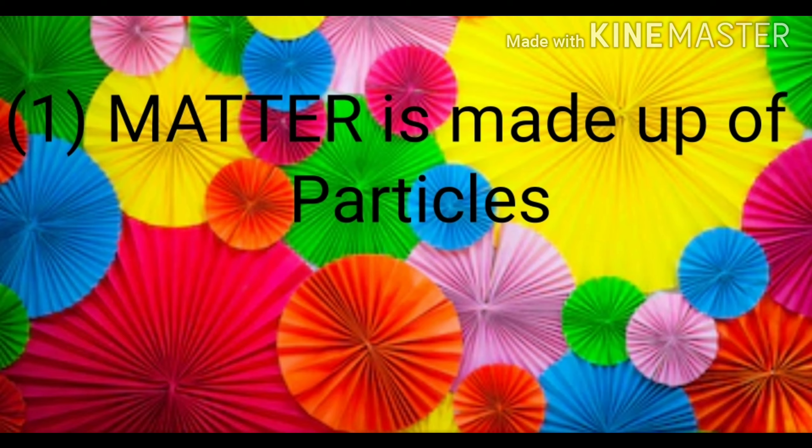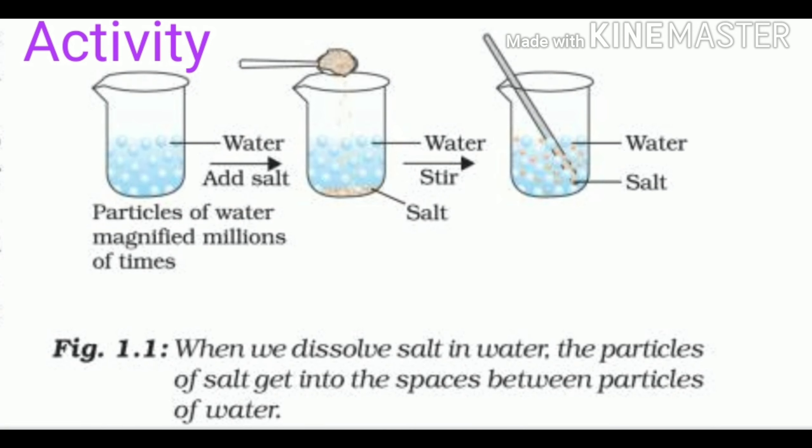In this activity, first we will take a 100 ml beaker. Fill half the beaker with water and mark the level of water. Now, dissolve some salt or sugar with the help of a glass rod. As we observe the change in water level, we will see that there is no change in water level. Then what happened to the salt? Where does it disappear?